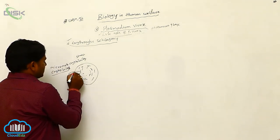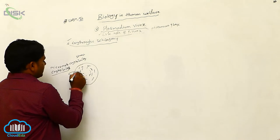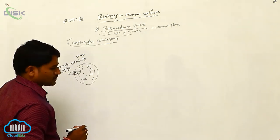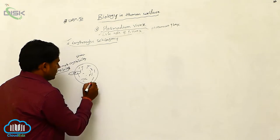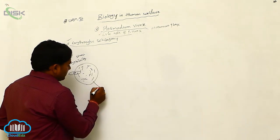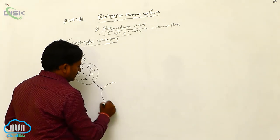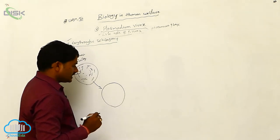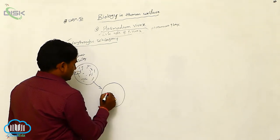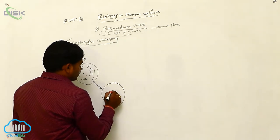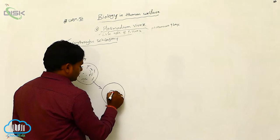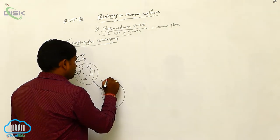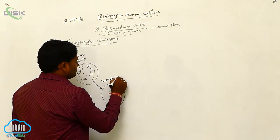This life cycle begins with the entry of micro-meta-cryptozoites or cryptozoites. These micro-meta-cryptozoites which entered into the RBC are transformed into trophozoite.